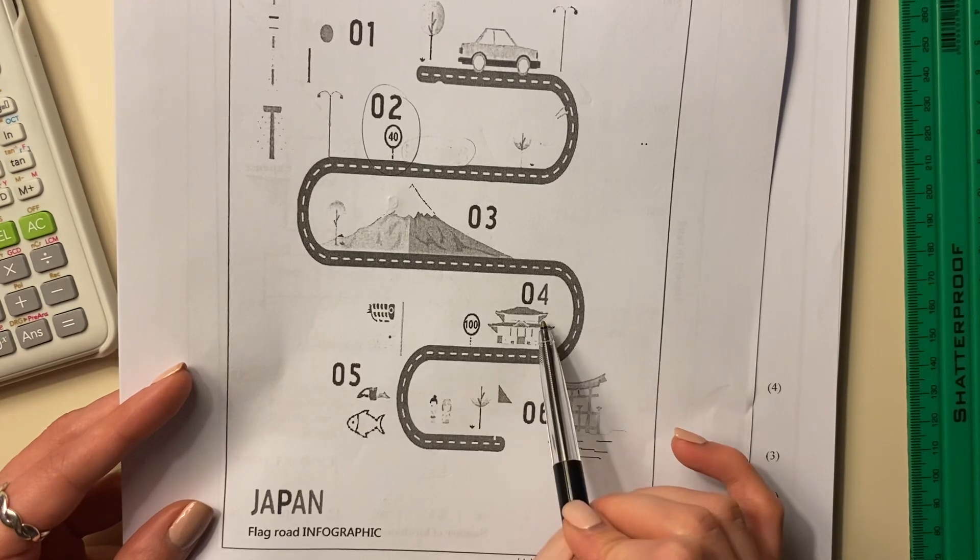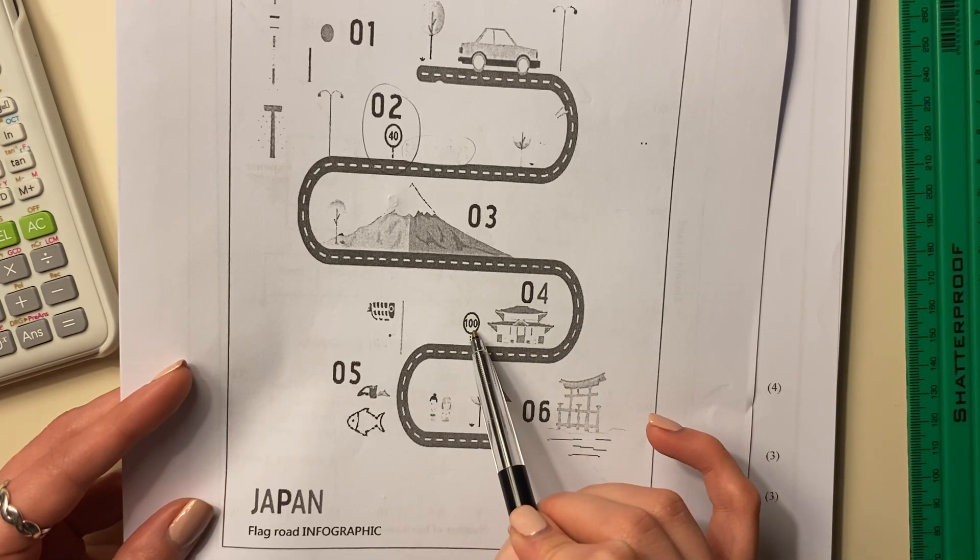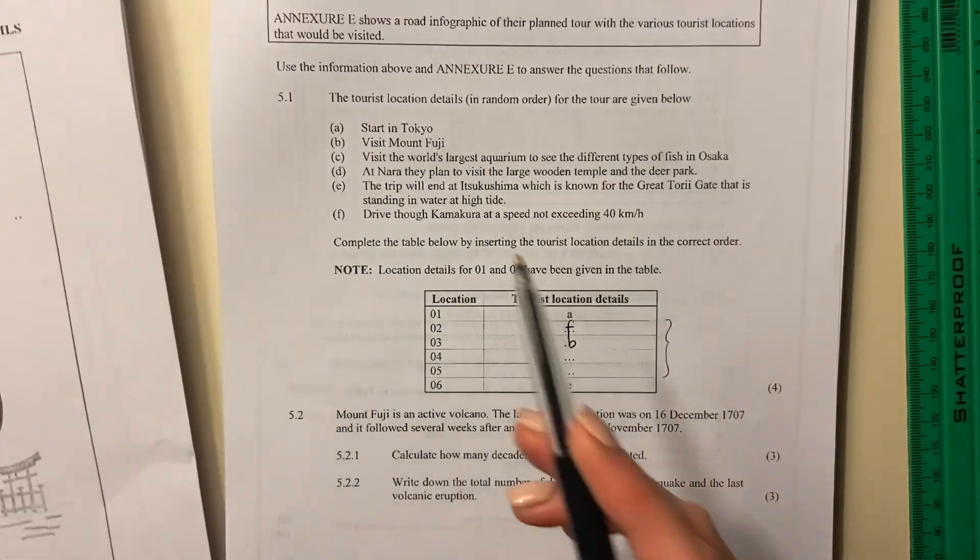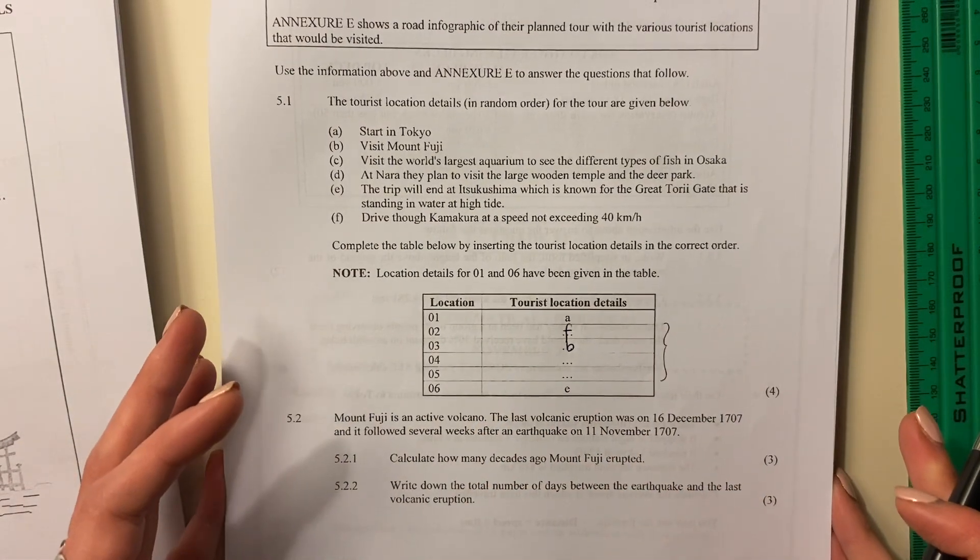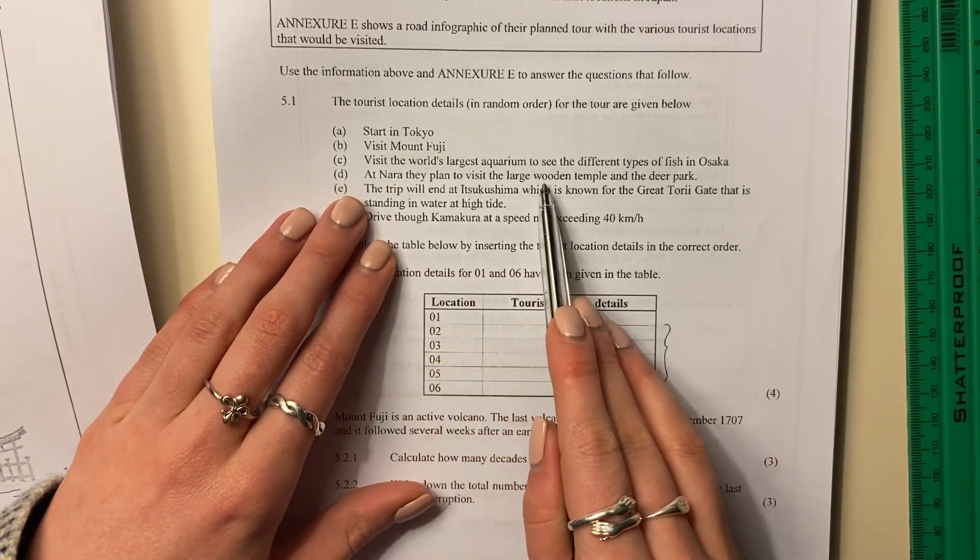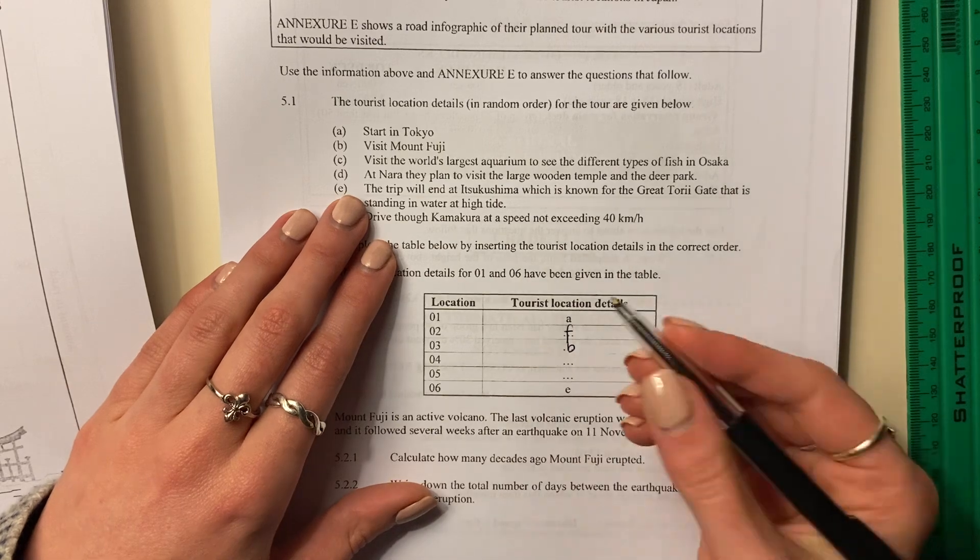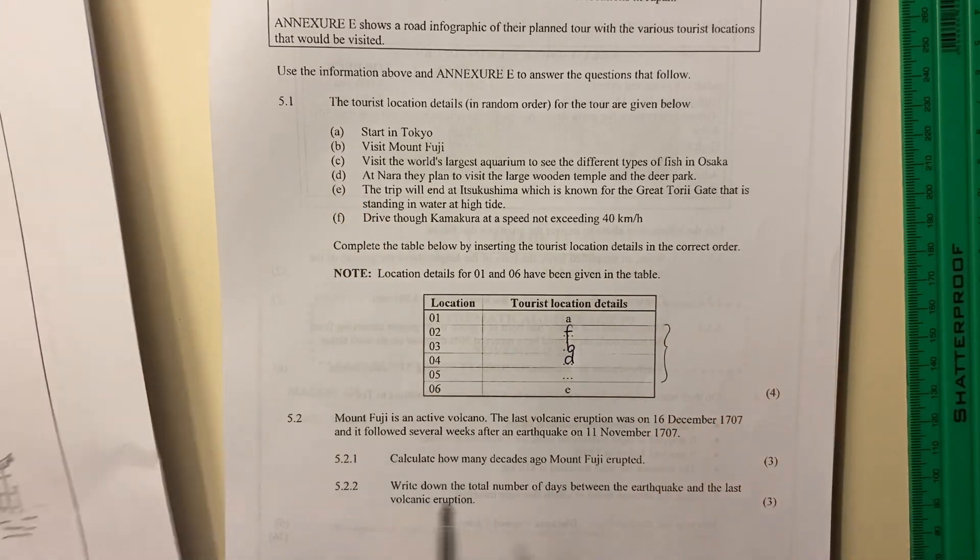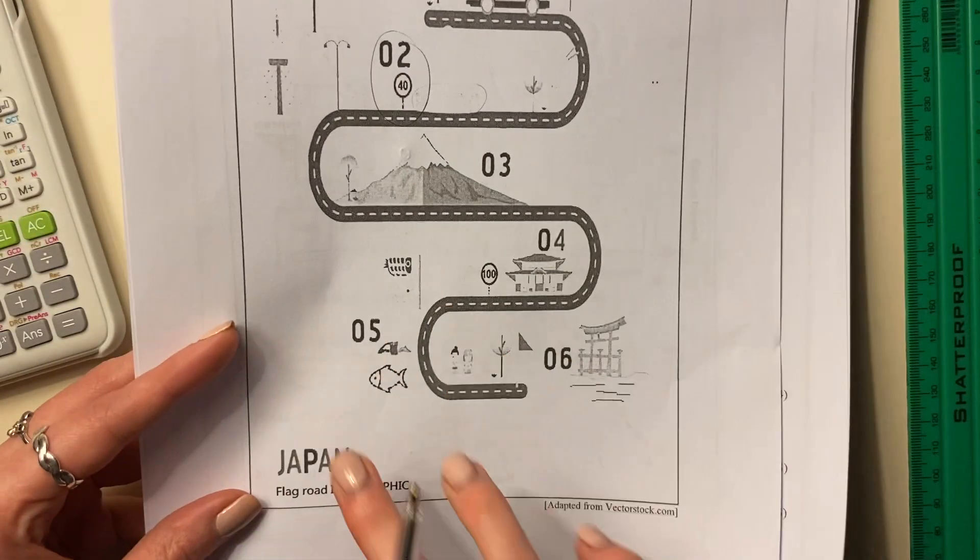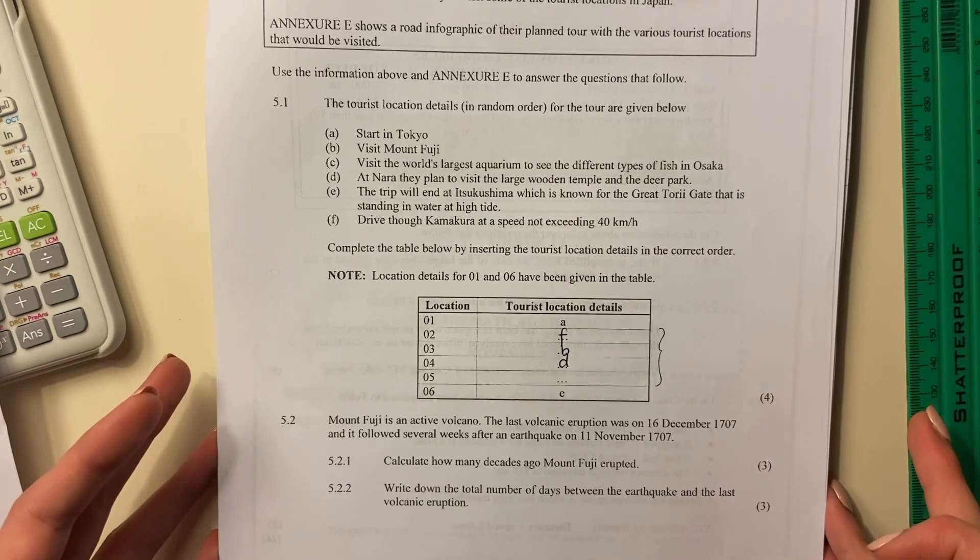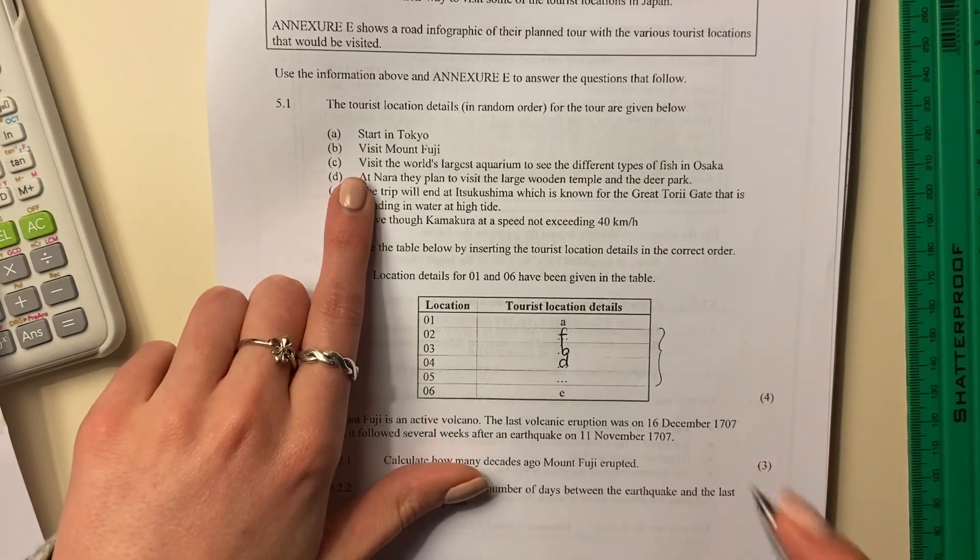Over here, there's a temple and there's 100 kilometers per hour speed restriction. So let's see and visit the world's largest aquarium. It's not that. It says at Nara, they plan to visit the large wooden temple and deer park. That sounds about right. So that's going to be D. Then the fifth one, we see some fish. It's probably going to be the aquarium. So let's go and find the aquarium. The aquarium is C.